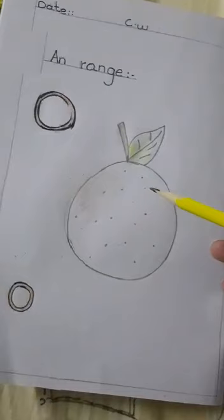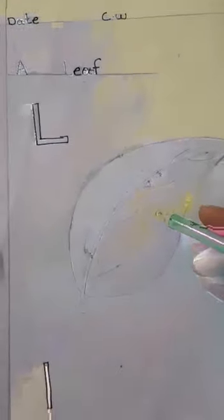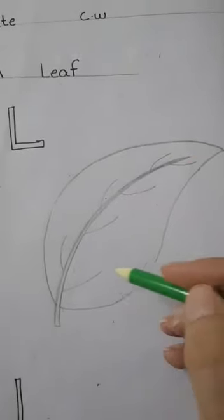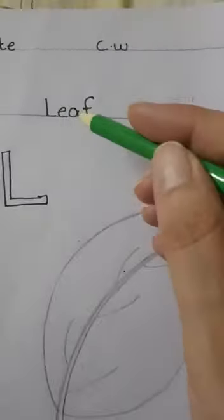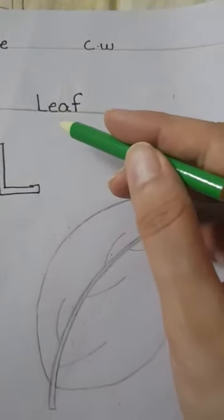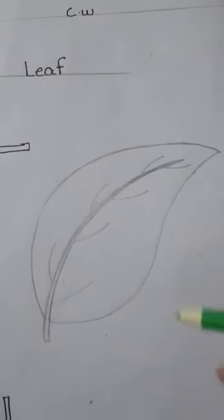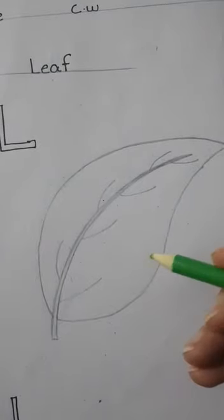Or leaf, patta. So dear students, now we have seen the leaf and we know how to draw it. We have also learned the spelling L-E-A-F, leaf. Now we are going to color it, and you know that leaf is green color.